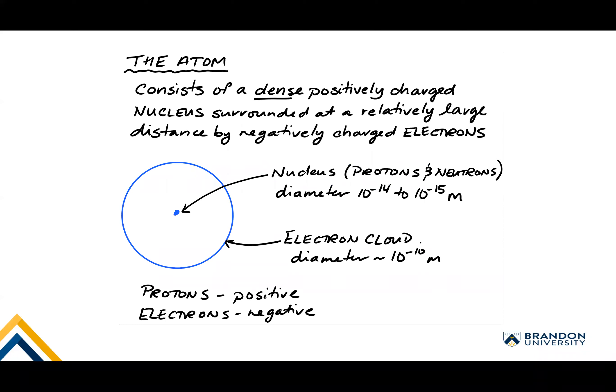When we think of the atom, there have been a number of different models we've worked through in gen chem one about how it works. But at its core, the atom is comprised of two parts: one is the nucleus, in which the protons and neutrons reside. This is a tiny, tiny portion of the atom, and because neutrons and protons have the majority of the mass, it not only has a positive charge but also essentially all of the mass of the atom itself.